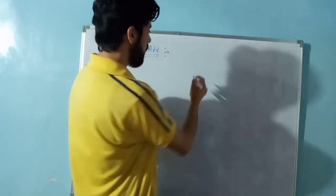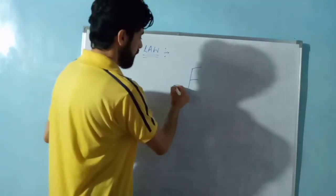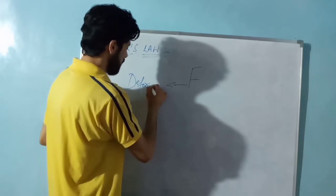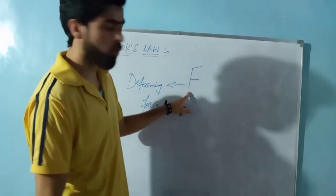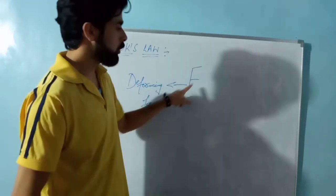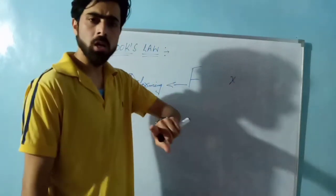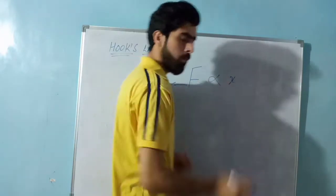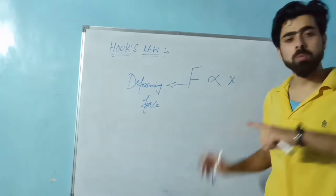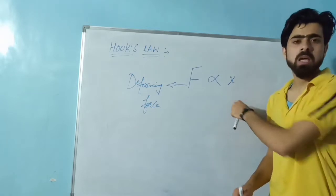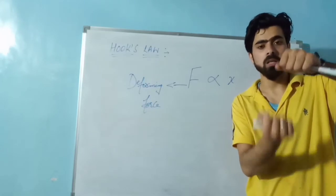If you have a force F — the deforming force — applied to an object, the extension produced is denoted as x. Extension means that if I put a force on an object, the change in length is x. So the extension is x.